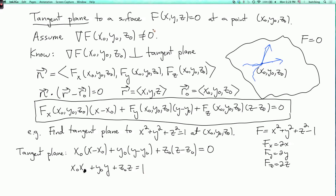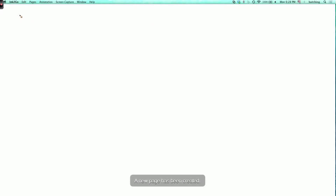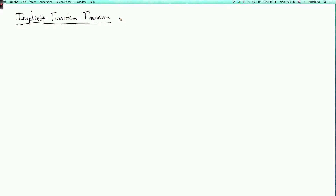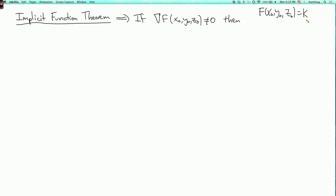Now I want to clarify the significance of the condition that the gradient is not equal to zero. The implicit function theorem can be used to show the following — I won't explain all the details. It says that if the gradient of F is not equal to zero at some point (x₀, y₀, z₀), and F(x₀, y₀, z₀) = k, then the level set where F = k is a smooth surface near the point (x₀, y₀, z₀).